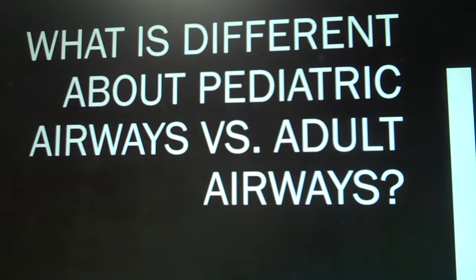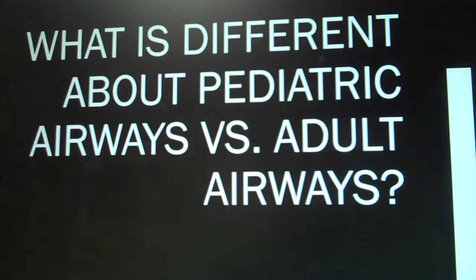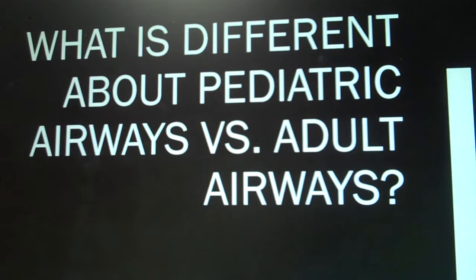A short lecture on pediatric respiratory. Note the differences between the pediatric airway versus the adult airway. Infants' airways are very small — four millimeters in diameter — compared to adults at 20 millimeters in diameter. The trachea increases in length during the first five years but not in diameter. A child's airway is more narrow, so there is increased airway resistance in children.